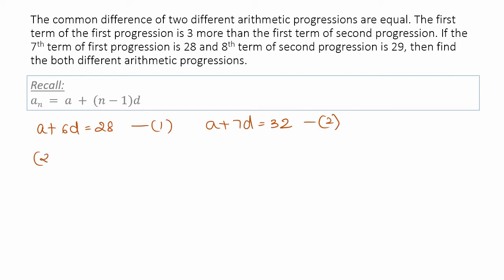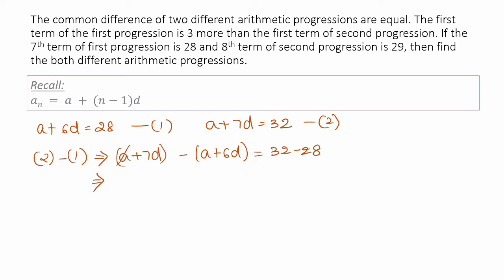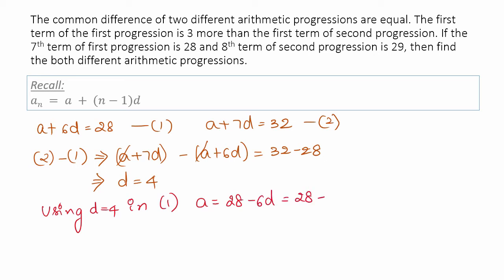So equation 1 is A plus 6D = 28, and equation 2 is A plus 7D = 32. Subtracting equation 1 from equation 2: A cancels, and 7D minus 6D gives D equals 4. Substituting D equals 4 into equation 1: A equals 28 minus 6 times 4 equals 28 minus 24 equals 4. So A equals 4.